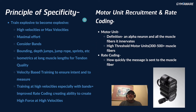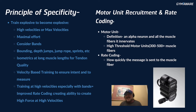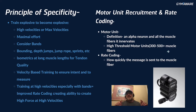Motor unit recruitment and rate coding: a motor unit is defined as any alpha motor neuron and all the muscle fibers it innervates. There are many slow, low-threshold motor units that you recruit all day long for simple tasks. High-threshold motor units require maximum effort and velocity to be recruited, and they innervate anywhere from 300 up to 1,000 muscle fibers. Rate coding is how quickly the signal is sent from the brain to the muscles to contract.